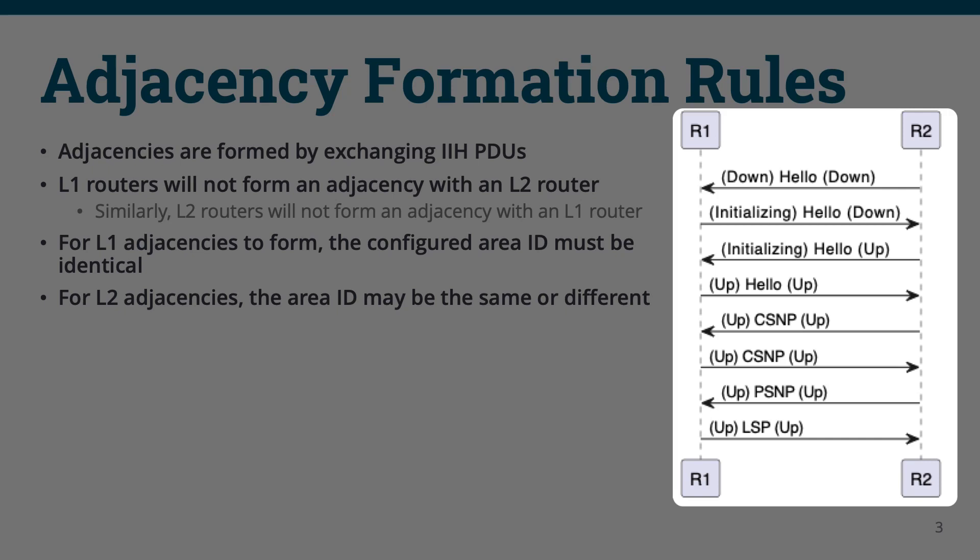Once R2 sees its own identifier in the list, it will know that not only is there two-way communication established, but R1 also agrees with the information in the IIH PDU and is compatible with becoming adjacent. At this point, R2 will have a neighbor entry in its system indicating R1 is a neighbor and will be in the up state.